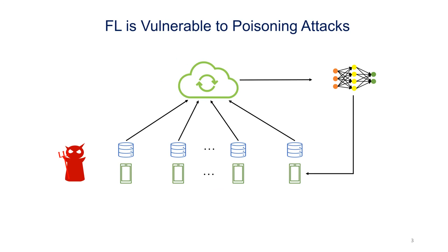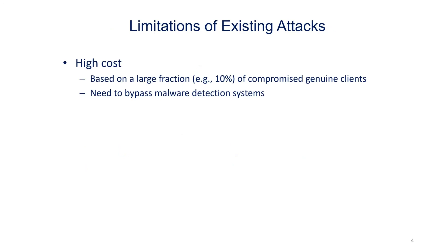Specifically, an attacker may control some clients in Federated Learning and use them to corrupt the global model while sending malicious model updates to the server. As a result, the poisoned global model will have low accuracy. There are some existing attacks which have several limitations. First, they all assume that the attacker can compromise a large fraction of genuine clients, which has been shown to be impractical in real-world applications. Moreover, the attacker needs to bypass malware detection systems on the compromised devices when performing those attacks, which is also challenging.